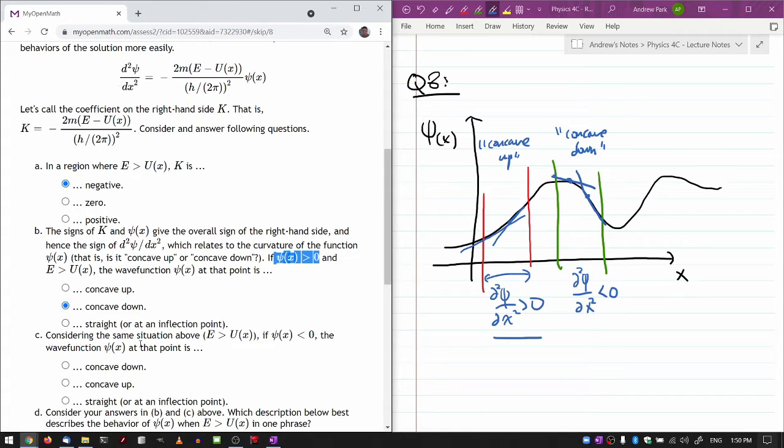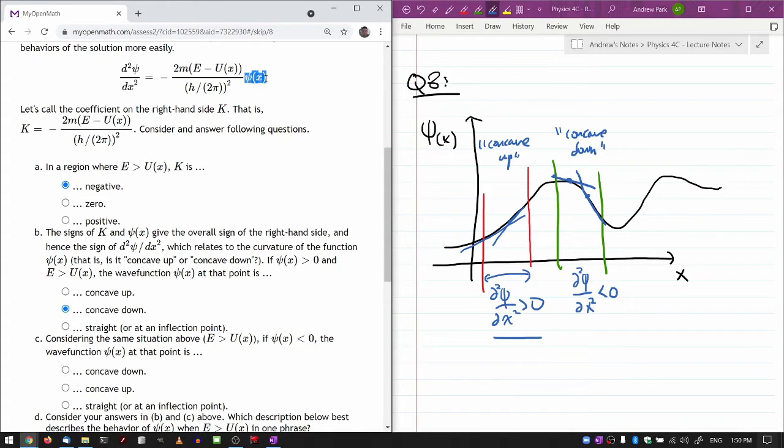Part C is where you have to be careful. Imagine if the wave function is negative. If this part is negative, then this right-hand side as a whole is actually positive, which means the second derivative is now positive, so it would be concave up.